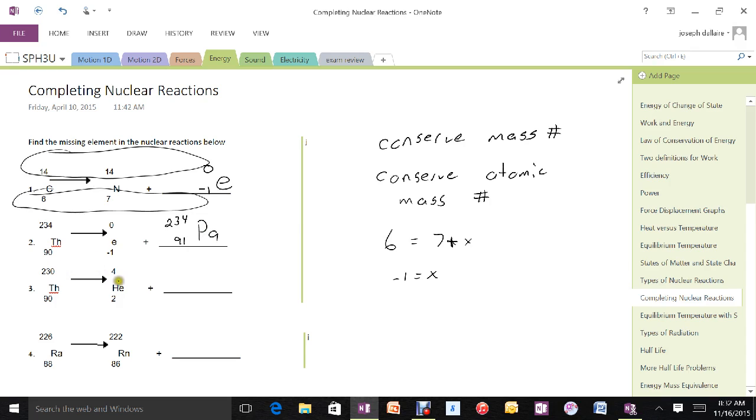Here, thorium emitting an alpha particle, which means 90 used up two of them, which leaves me with 88 on the bottom. And 230 less the 4 gives me 226. And again, going to my periodic table, 88, that's radium.